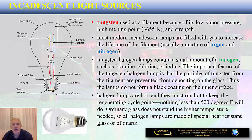Halogen is used in small amounts to basically prevent the particles of tungsten from the filament from being deposited on the glass. During the operation of the incandescent lamp, when the tungsten is heated to high temperatures, particles of tungsten will leave the filament and deposit on the inner side of the glass bulb, observed as a black coating. To prevent that, we add halogens such as bromine, chlorine, and iodine, which prevent this buildup on the inner surface of the glass.